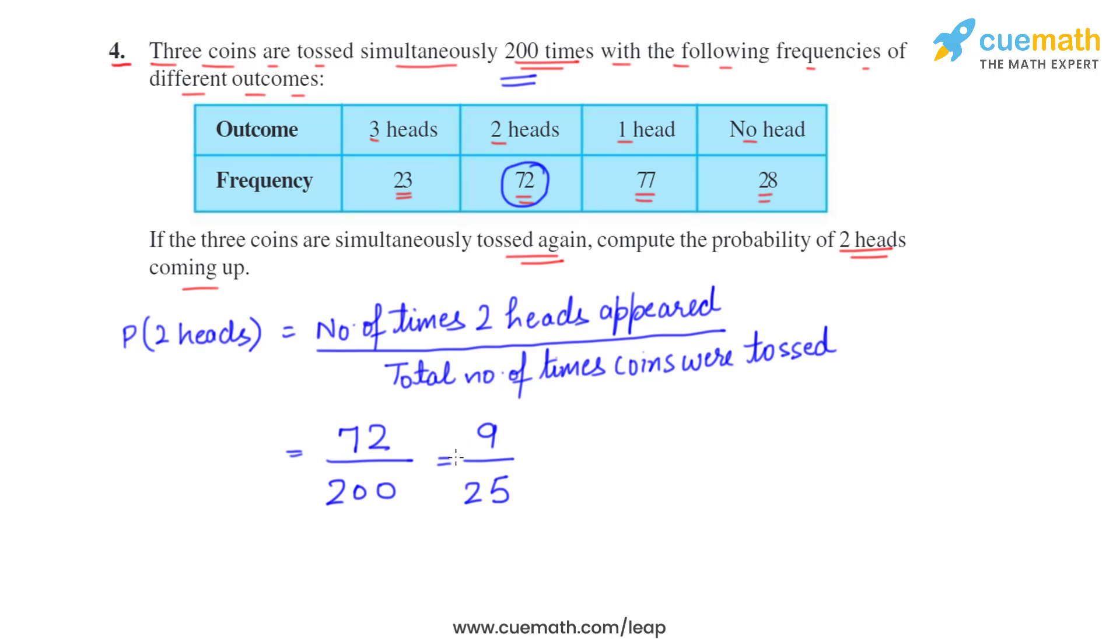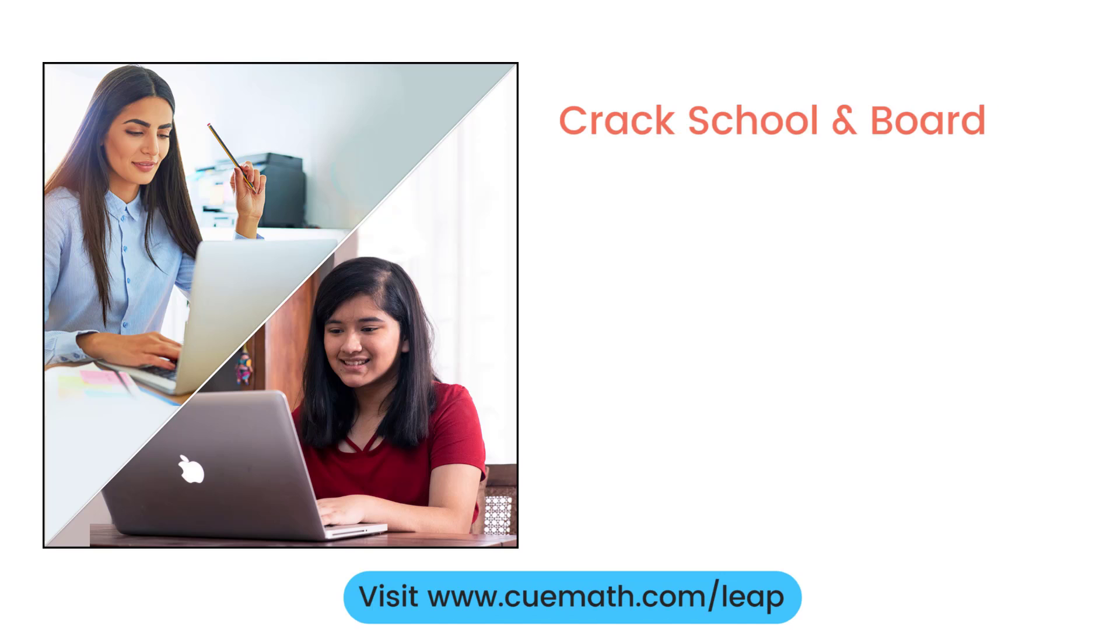So 9 by 25 is the probability of getting two heads when the coins are tossed. To learn more about how Cuemath can help you crack school and board exams, explore Cuemath Leap.